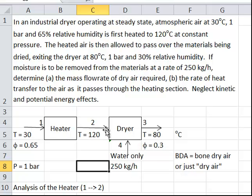And then I'm going to add 250 kilograms per hour of water coming from the material I'm trying to dry. That's going to be added into this moist air to create moist air at 80 degrees C and 30% relative humidity. When I use BDA, that is my way of saying that I want dry air.